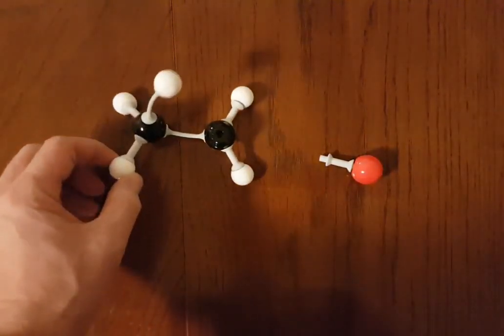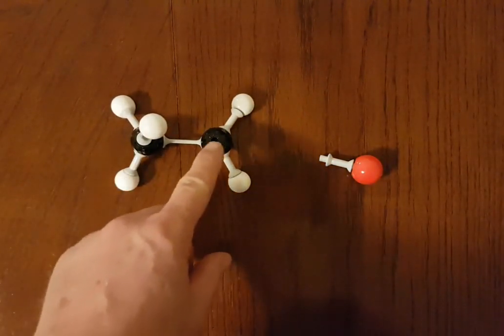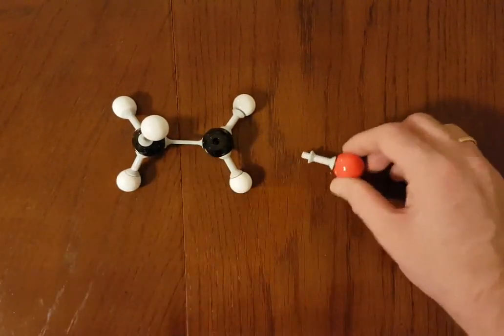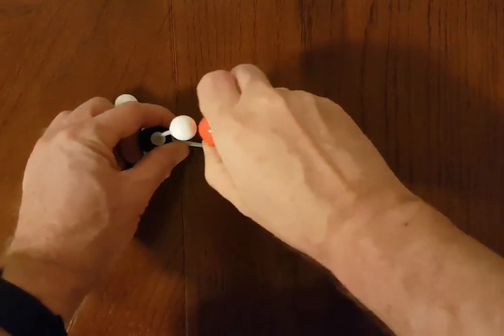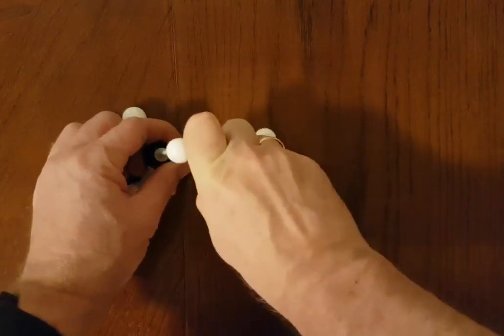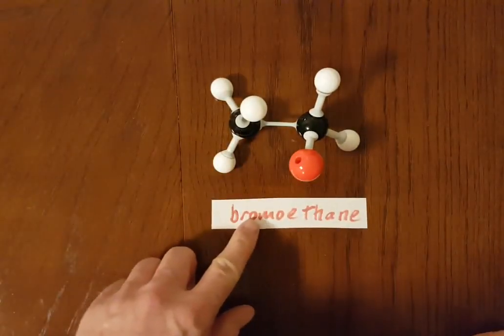And so this now leaves a carbocation, which is an organic chemical with a positive charge on it. This carbon is positive. This is the bromide ion. The bromide ion is attracted by electrostatic attraction. And the second step of the mechanism, bromoethane.